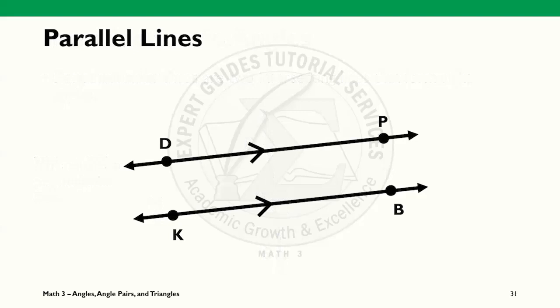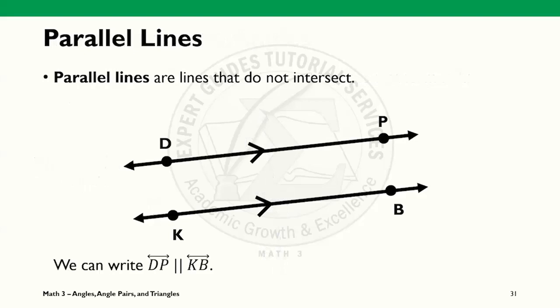Parallel lines, on the other hand, are lines that do not intersect. By notation, we can write line DP is parallel to line KB.